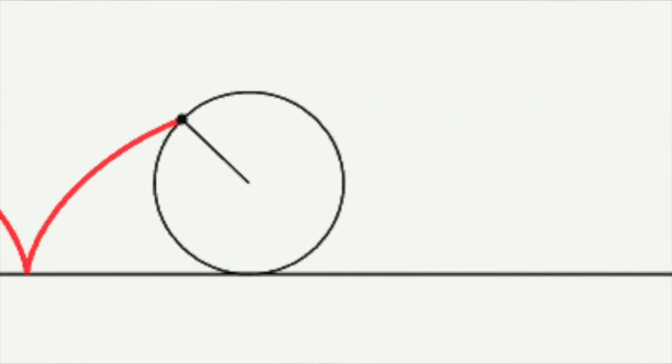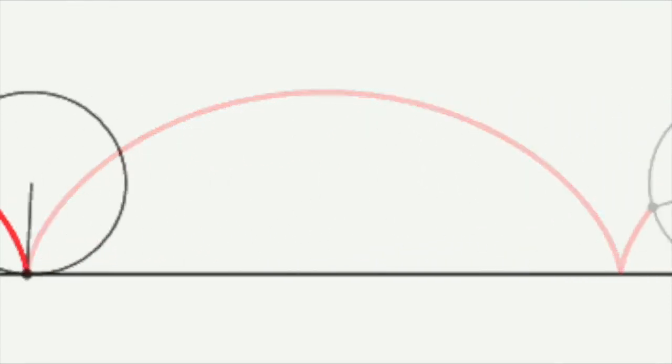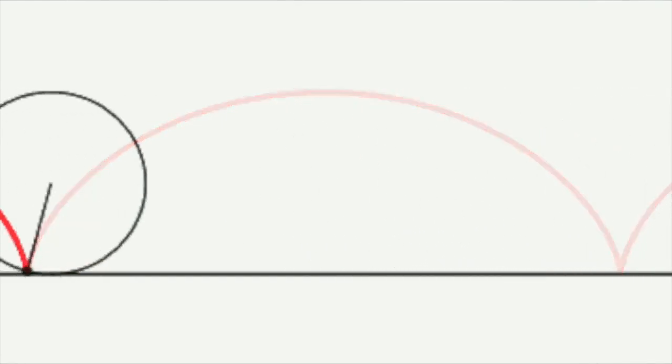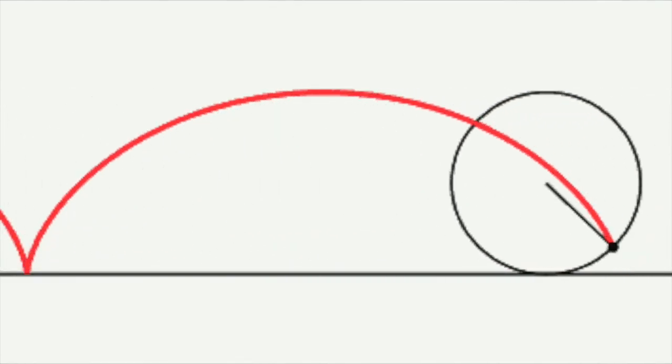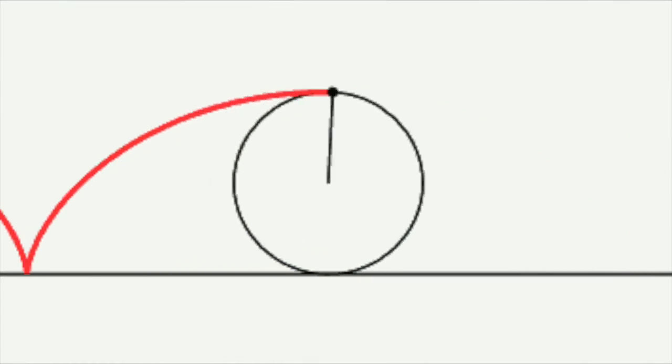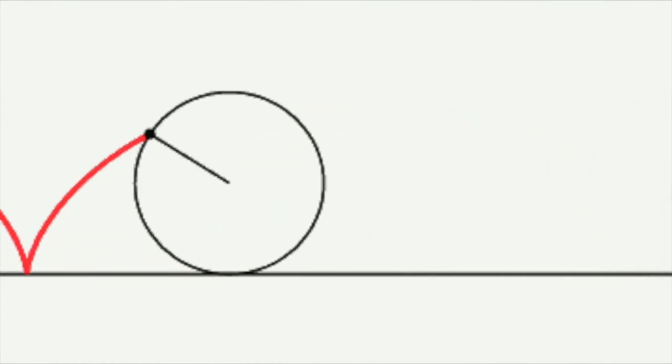The cycloid was named by Galileo in 1599 and it turns out to be the solution to two classic problems in maths: the brachistochrone problem and the tautochrone problem.